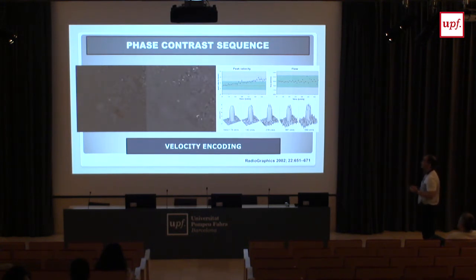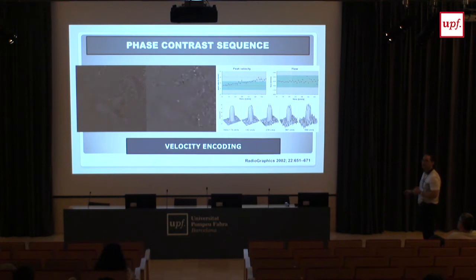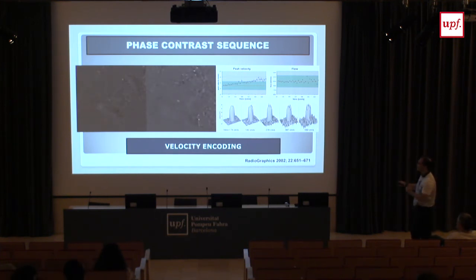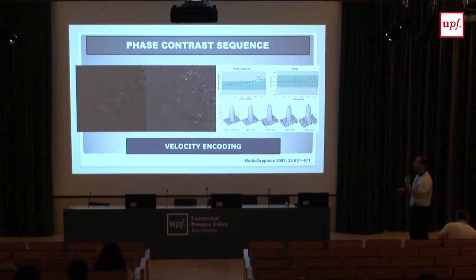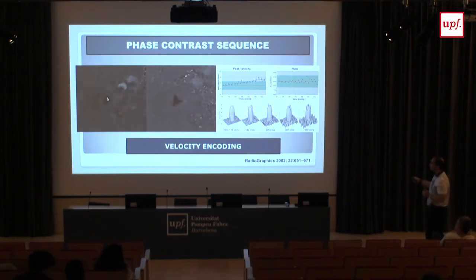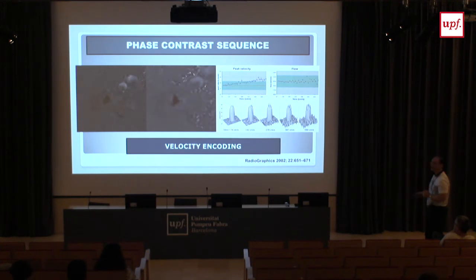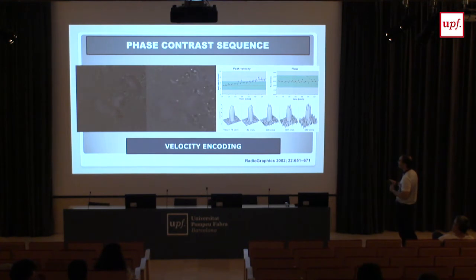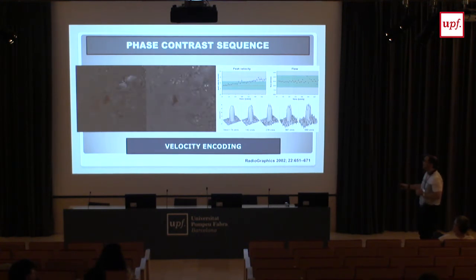One might ask why we don't simply start with a very high velocity encoding to avoid this problem. The issue is that if we use a high velocity encoding, we get a lot of noise in our flow measurements — we don't have an accurate determination of the maximum or minimum velocity. The higher the velocity encoding we use, the more noise we have in our images. So we have to incrementally choose the right velocity, for example starting at 100 cm/s, and increase it until we get an image with no aliasing.